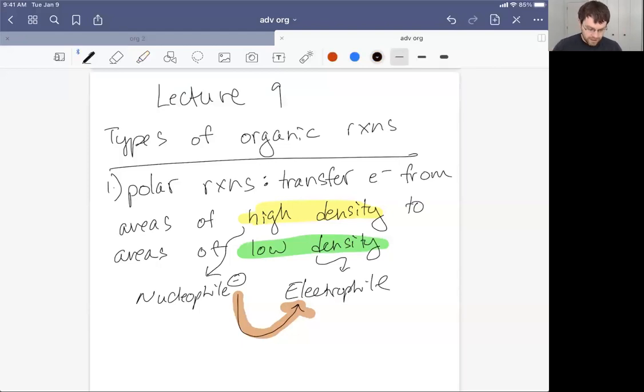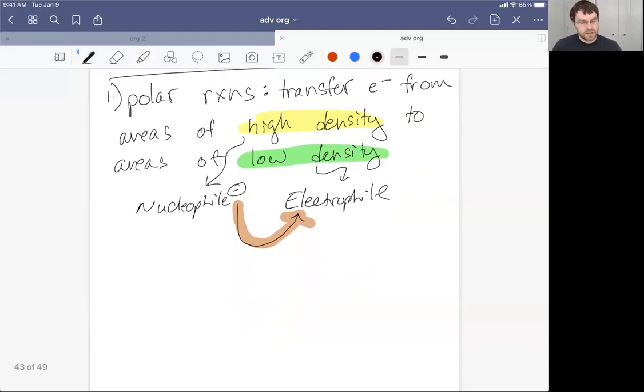For the most part, these are the reactions that we've seen. Within polar reactions, we have two other super broad categories to consider, and that is polar reactions under basic conditions and polar reactions under acidic conditions.